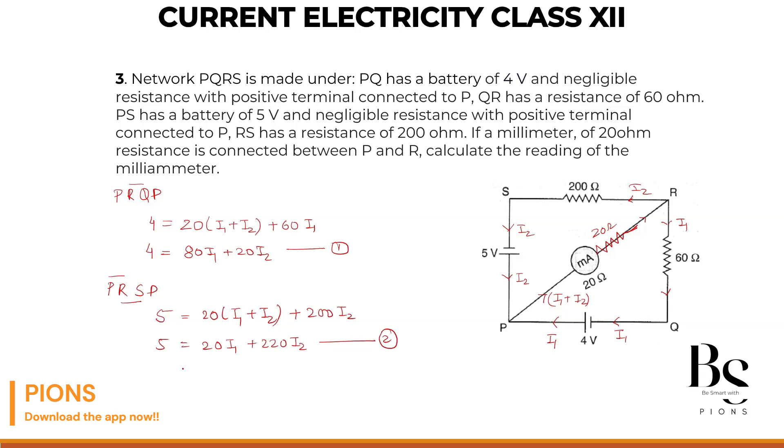Let's multiply the second equation with 4. 5 is 20, 80 I1 and 4 times 220, 880 I2. Let's subtract equation 1. So minus 4 minus 80 I1 and minus 20 I2. This will cancel out.